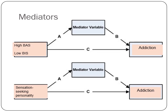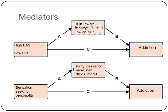Looking at mediators: people who are high in BAS and low in BIS have high reward seeking and low caution. It is this personality trait and associated behaviors that make them more susceptible to addiction — it's not an automatic pathway. A sensation-seeking personality, particularly high in disinhibition, might go to parties, desire more stimulation and drugs, and that could in turn lead to addiction. High BAS, low BIS profiles and high sensation seekers are more susceptible to addiction.